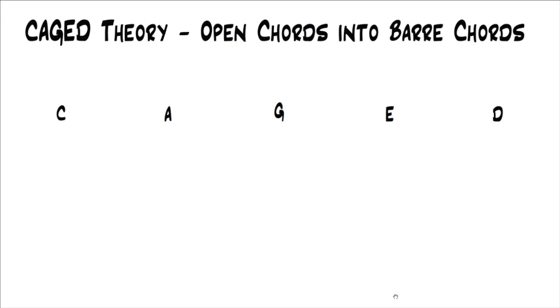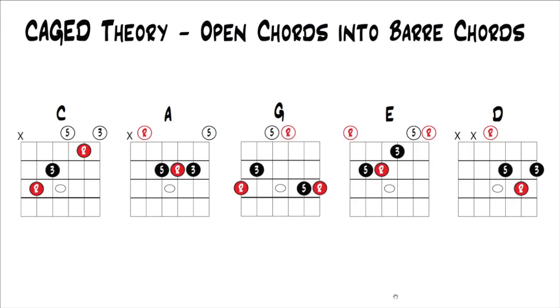The CAGED system is based on the open chords C, A, G, E, D. Those open chords spell CAGED — that's where this is all coming from.